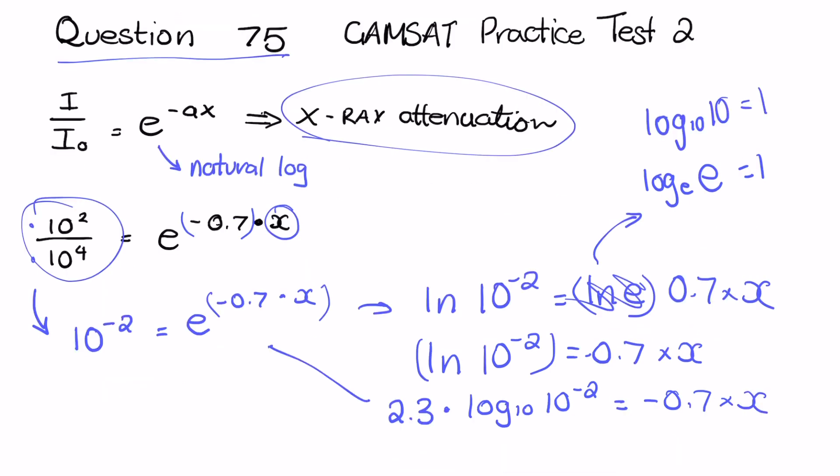So from here we can then solve for x a lot more easily. So just to solve the log here, 10 to what power will equal 10⁻²? So 10⁻² will equal 10⁻². So this will just equal -2. So 2.3 × -2 is -4.6. And if we divide that by our -0.7, we get the value of x. So in the practice test I think the answer was 6.6 centimeters, and we get an answer that's very close to that. So that's one way that we can calculate natural logs and put it into something that's more familiar to us.